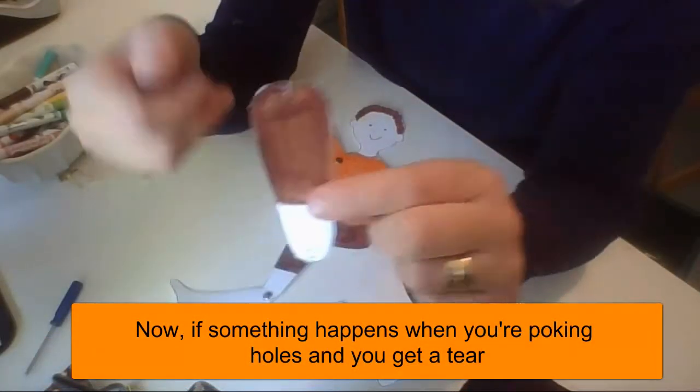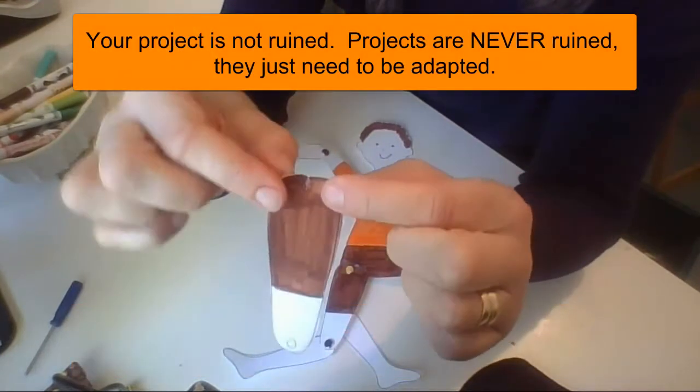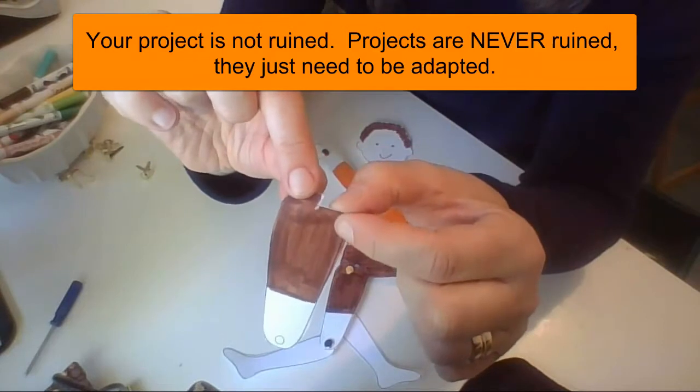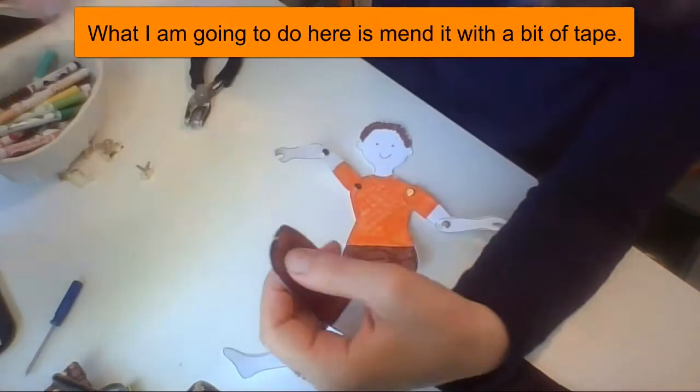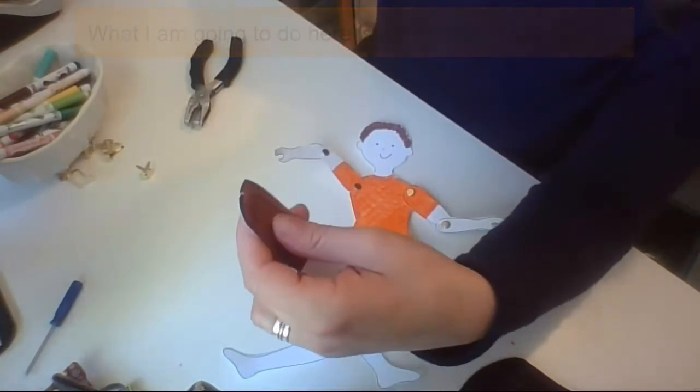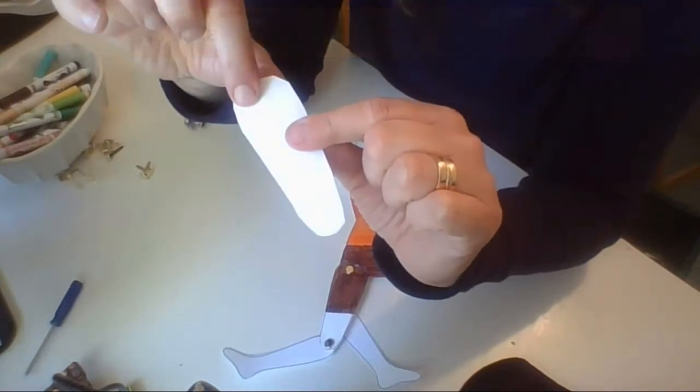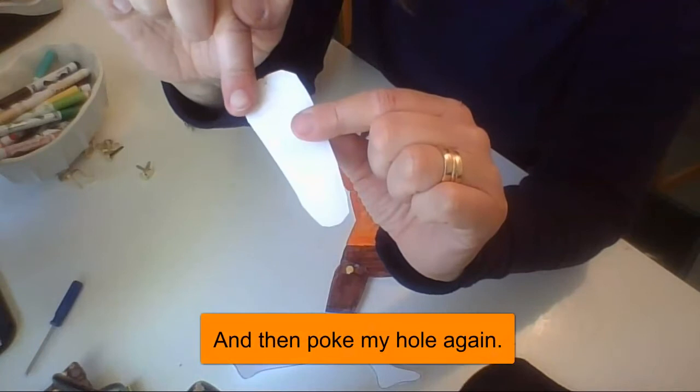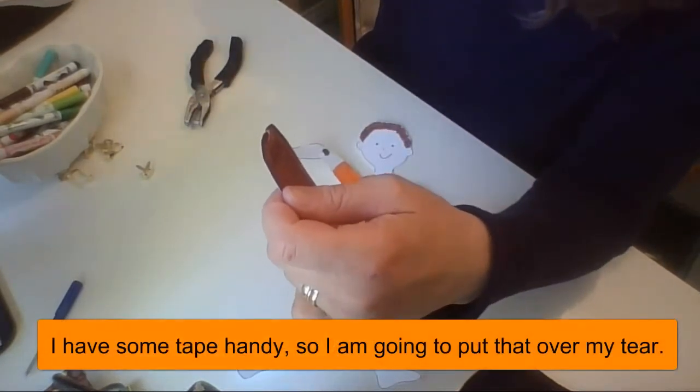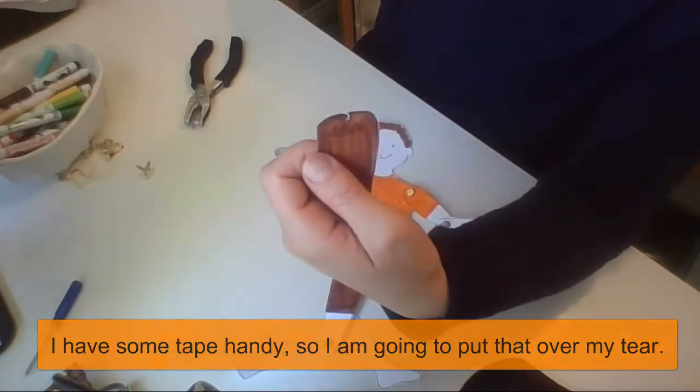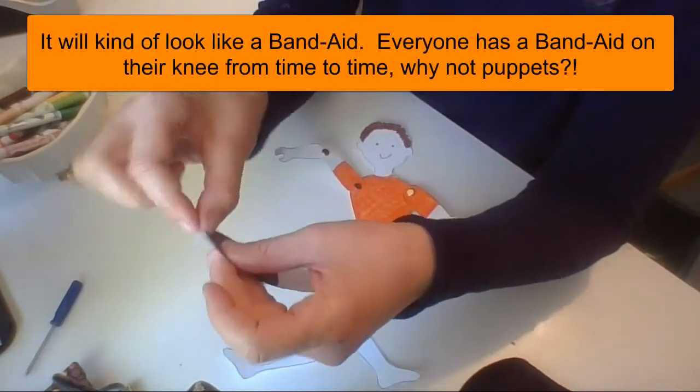Now, if something happens when you're poking holes and you get a tear in your piece, your project is not ruined. Projects are never ruined. They just need to be adapted. What I'm going to do here is mend this a little bit. I'm going to take a bit of tape. I could even take another piece of paper and glue it onto the back and then poke my hole again. And that extra piece of paper is going to go over the top. I have some tape handy though. So I'm going to put that just fold it over the top of my piece.